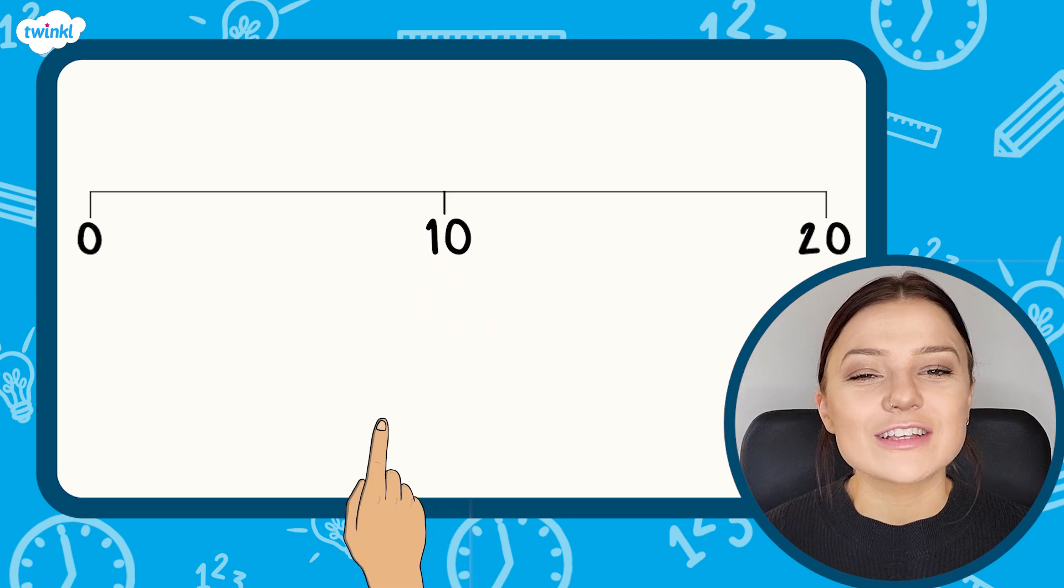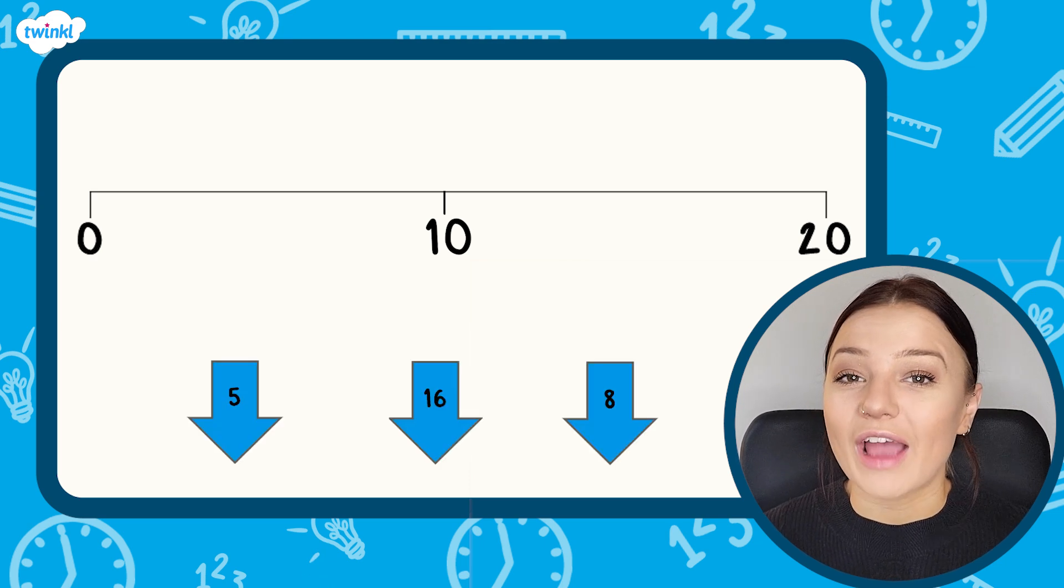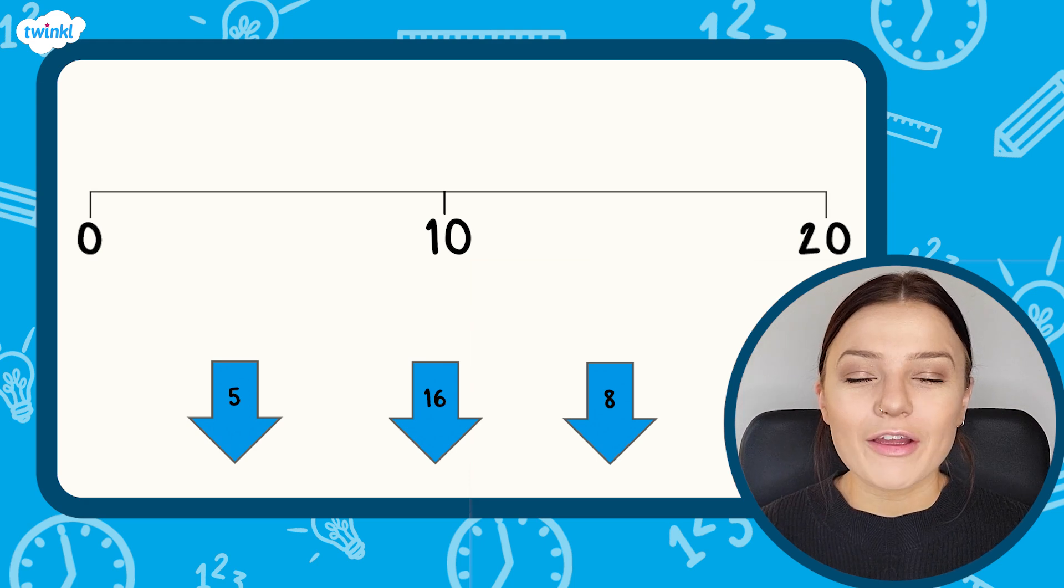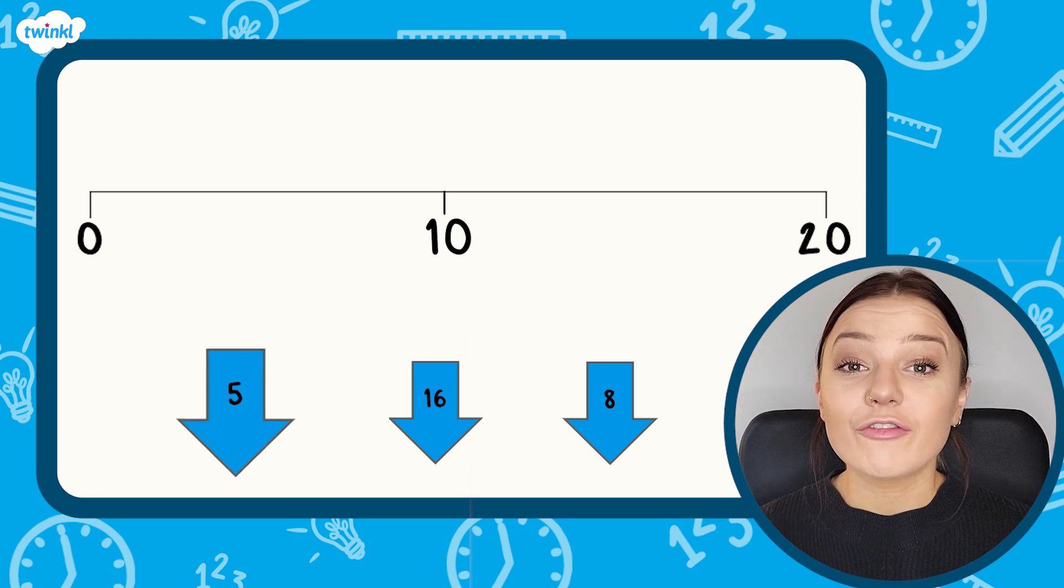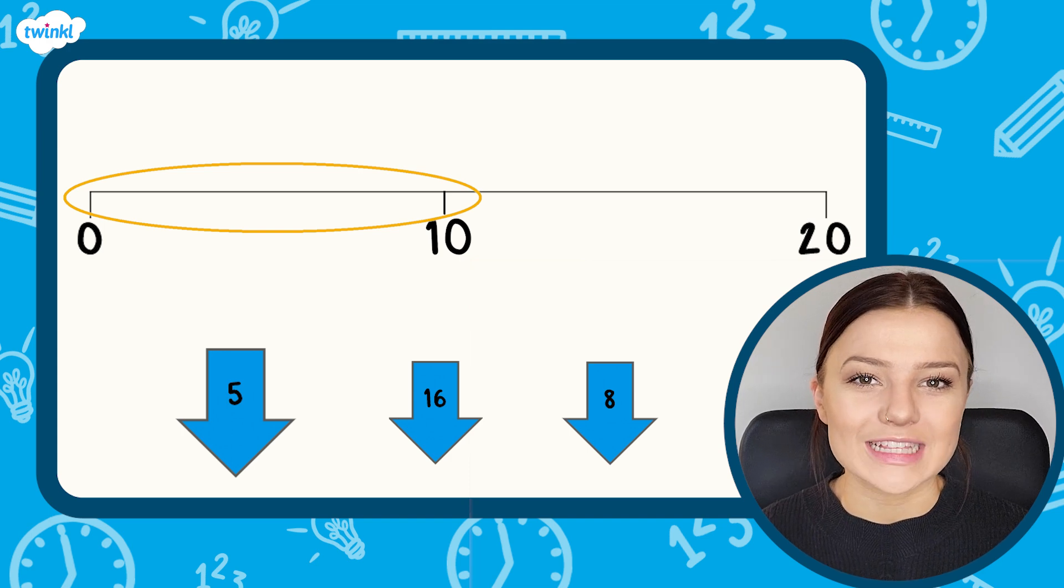Here I have some arrows with numbers between 0 and 20. I need to estimate where on the number line these arrows should be pointing. The first arrow has the number 5 on it. 5 is less than 10, so it should be on this side of the halfway point.